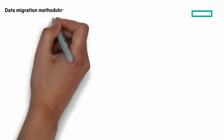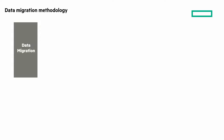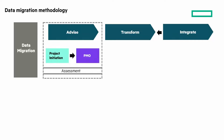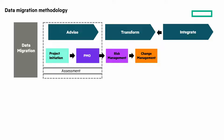Here's a quick look at the data management migration methodology we use. There are three key areas: advise, transform, and integrate. The Data Migration Readiness Assessment Service is solely an advisory service. It will focus on things like environmental discovery, data collection, remediation, target environment design, and test prediction and acceptance test plan. This phase is critical to a successful data migration. Additional phases of the data migration methodology include risk and change management and project governance and closure.